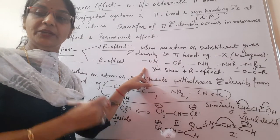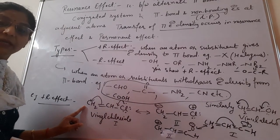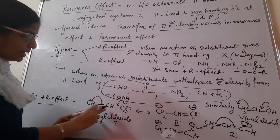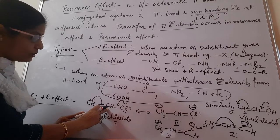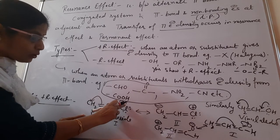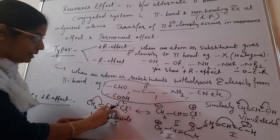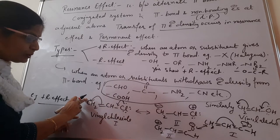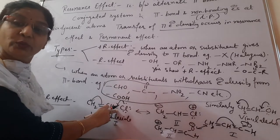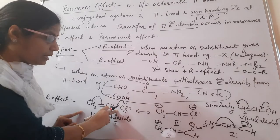For example, consider vinyl chloride. The chlorine atom has three lone pairs and is present at an adjacent position to the carbon atom having the pi bond. So electron movement occurs from the chlorine atom — the lone pair gets transferred to the adjacent carbon and the pi bond shifts. Since electron density is being transferred towards the pi bond, it is said to have plus R effect.